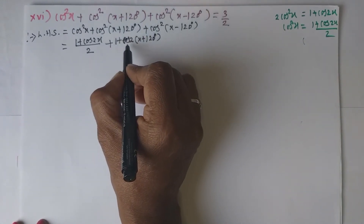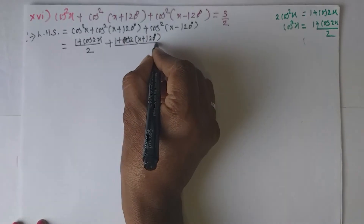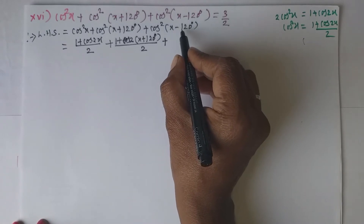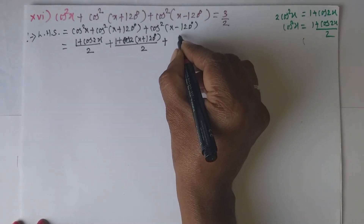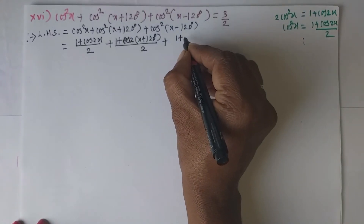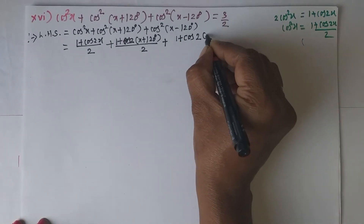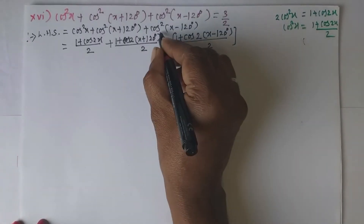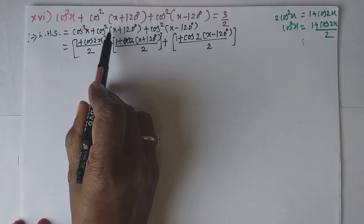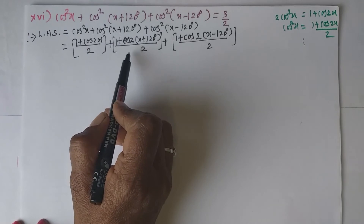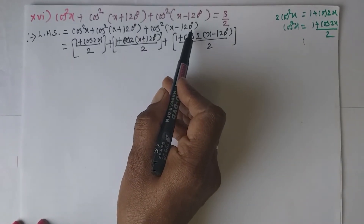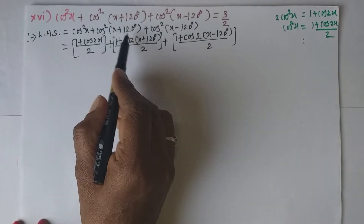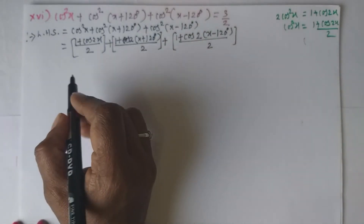We used the half angle formula cos²x = (1 + cos2x)/2, the compound angle formulas for cos(A + B) and cos(A - B), and the allied angle formula cos(π + θ) = -cosθ.